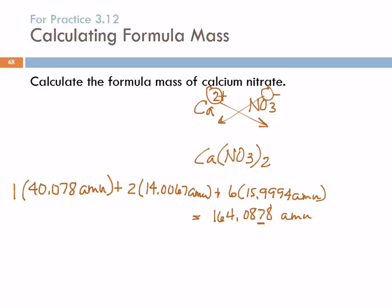Why did I use AMUs instead of grams? That's a good question. This is the formula mass — the mass of one formula unit. The formula unit is one calcium atom, two nitrogen atoms, and six oxygen atoms. It does not weigh 164 grams for one formula unit. A mole of formula units would be 164 grams. So which units go with which? Moles use grams; atoms use atomic mass units. It's an important distinction.